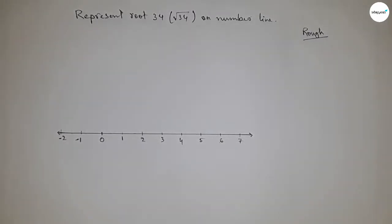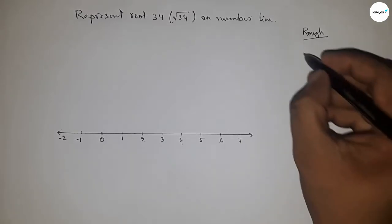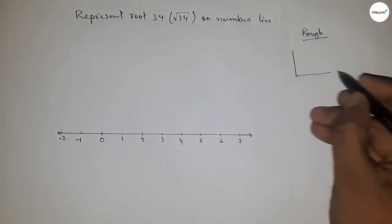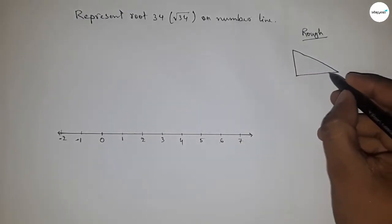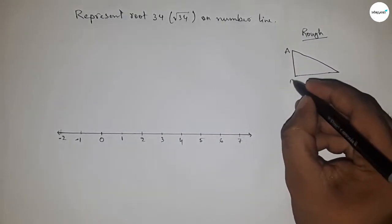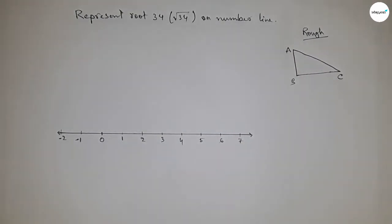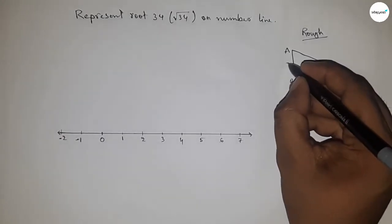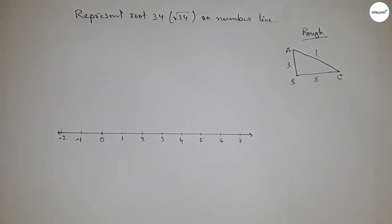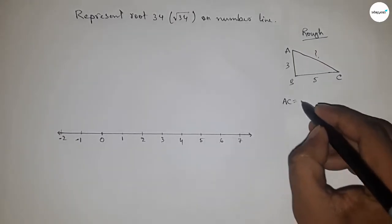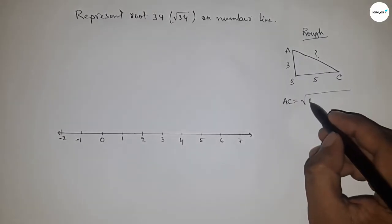If there is a right angle triangle ABC, this is a right angle triangle. If the base is five and height equals three, then what is the hypotenuse? By Pythagorean theorem, hypotenuse equals root over height square plus base square.